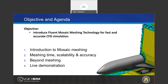The first point would be the introduction to mosaic meshing. Second, we will look a little bit more into numbers such as meshing time, scalability, accuracy, etc. Then we will look at what can be done on the solver level to manipulate those meshes and further leverage ANSYS tools for fast and accurate CFD simulations. We will also do a quick live demonstration of how to use these technologies.